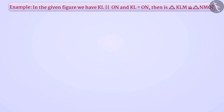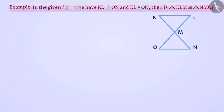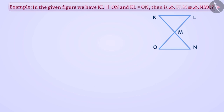Next example: in the given figure, KL and ON are parallel and KL is equal to ON. Is triangle KLM congruent to triangle NMO?